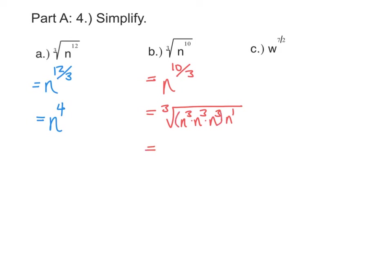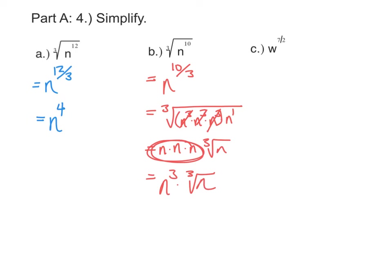Each one of those groups can cancel with the third root. So the cubed root of n cubed is n, and the cubed root of n cubed is n, and the cubed root of n cubed is n. But the cubed root of n by itself is just going to stay the cubed root of n. So rewriting all of these gives us n cubed times the cubed root of n as a simplified expression.